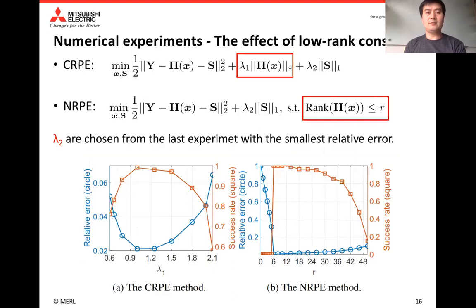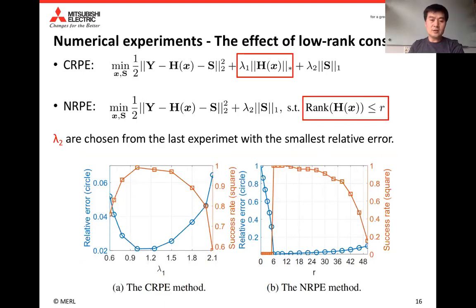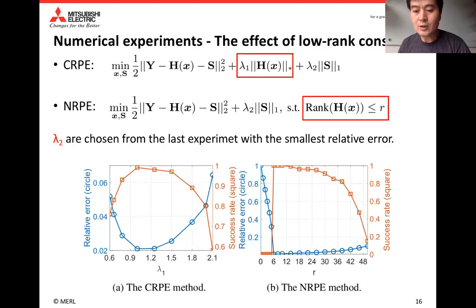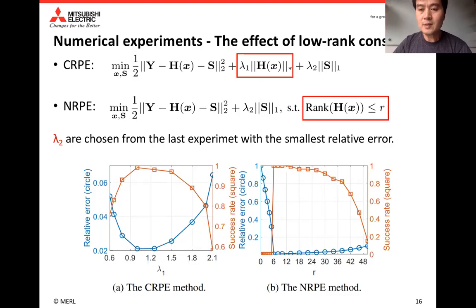In another experiment, we fixed lambda two chosen from the previous experiment and adjusted lambda one for the convex method or the rank constraint R for the non-convex method. We observe that the convex method has a very narrow range of lambda one to achieve a high success rate with low relative error, while the non-convex method can achieve high success rate and low relative error over a large range of R, the maximum rank constraint.